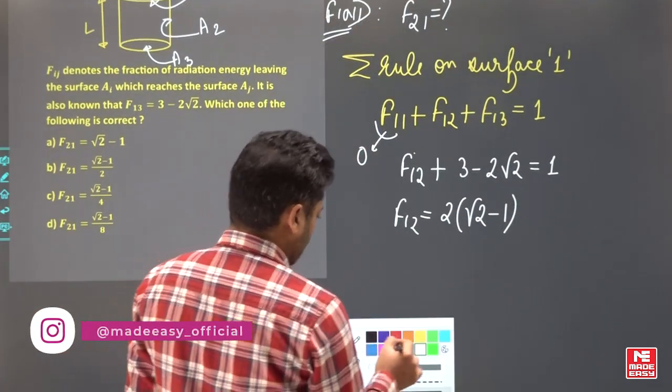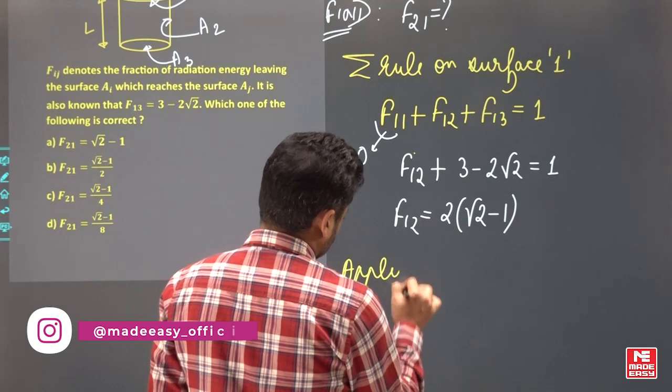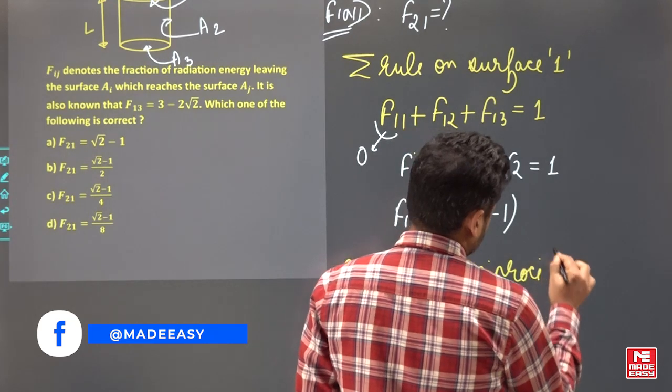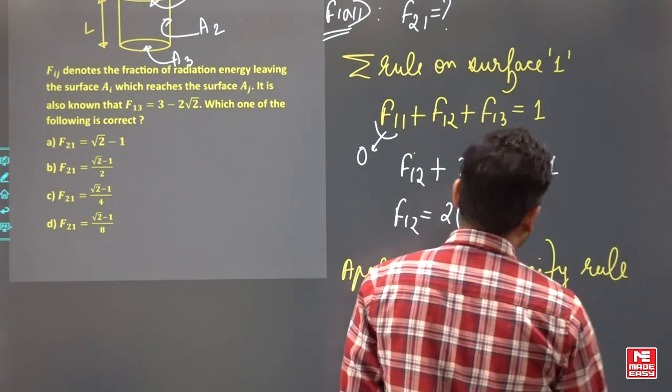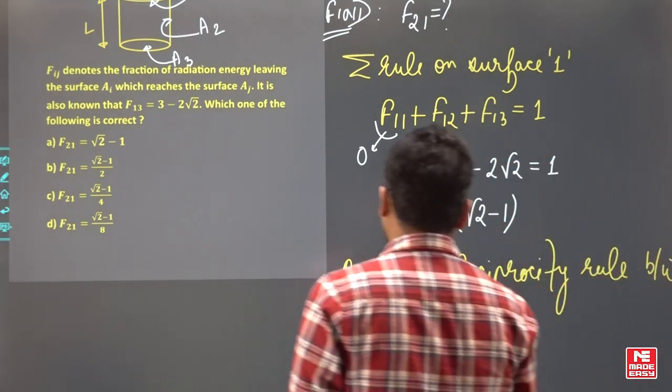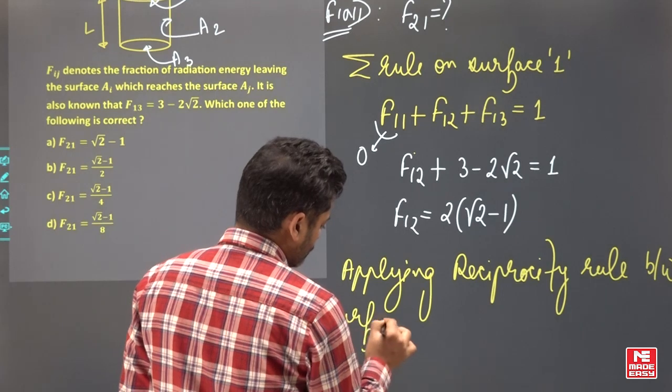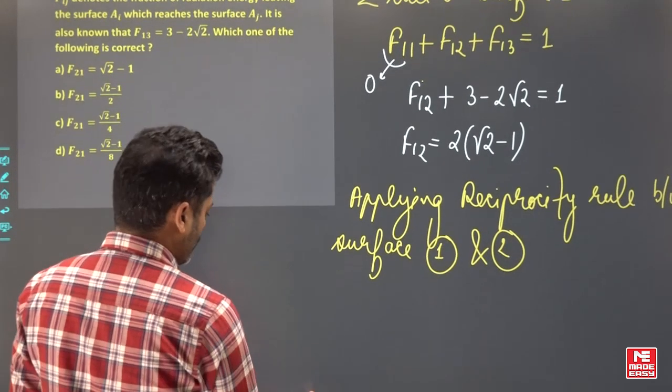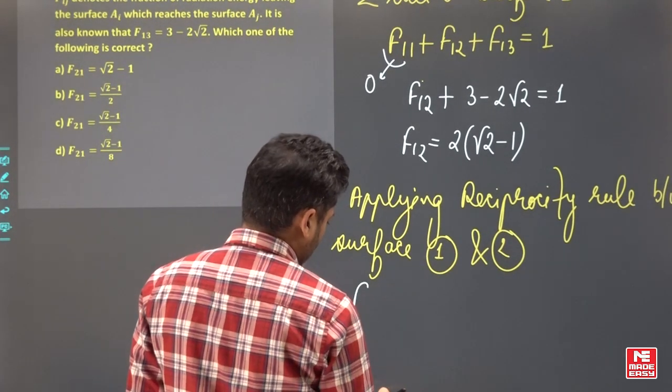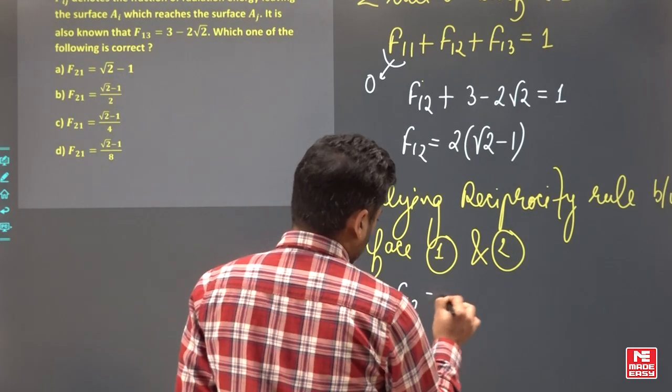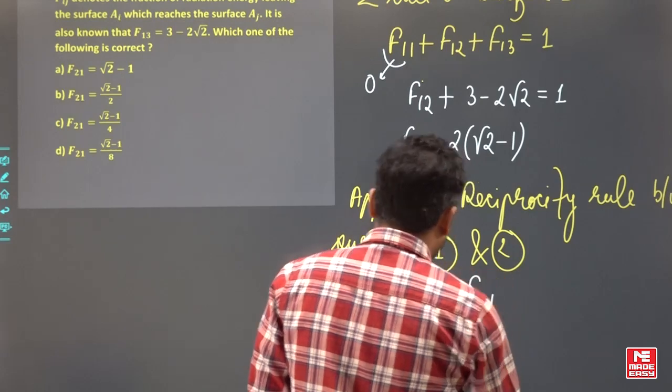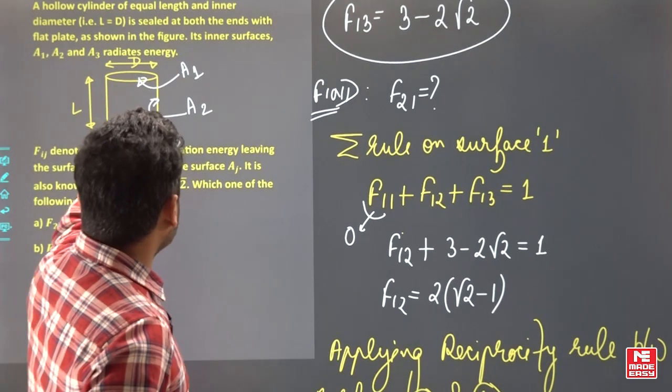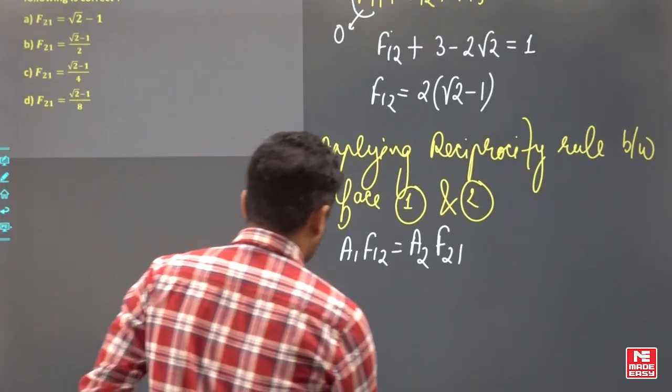Now you want F21, so by applying reciprocity rule between surfaces 1 and 2. What is reciprocity rule? A1 F12 equals A2 F21. What is A1?